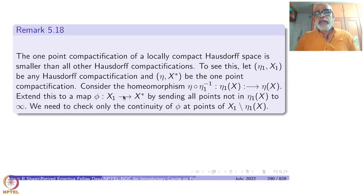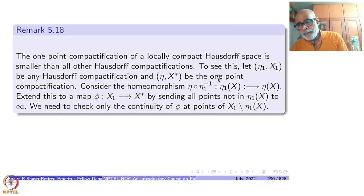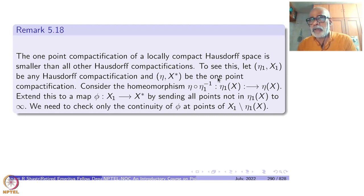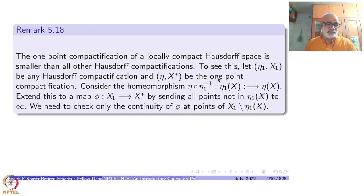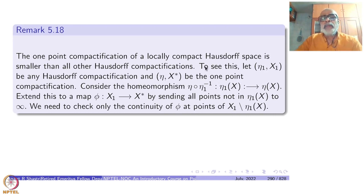The one-point compactification of a locally compact Hausdorff space is smaller than all other Hausdorff compactifications. We have put a partial order on compactifications — some may not be comparable — but the one-point compactification is smaller than all of them. In particular, each one-point compactification is smaller than all others, but smaller in both directions need not imply equality.